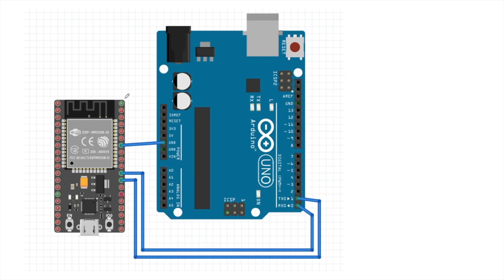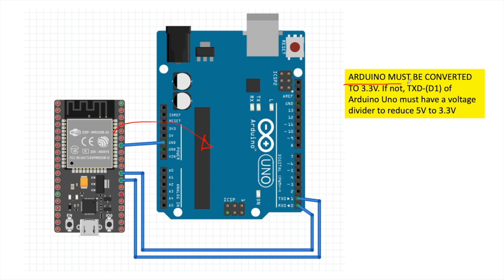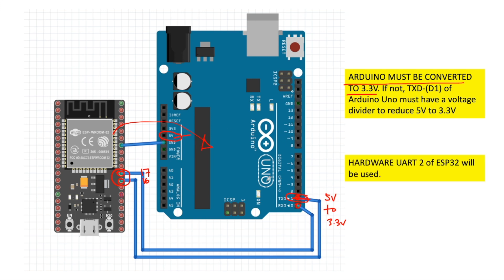To do some demonstration, we will be connecting our ESP32 to an Arduino Uno. This Arduino must be converted to 3.3 volts so that we can directly connect the TX and RX to the RX and TX of the ESP32. In the ESP32, we are using UART2, which is GPIO 16 and GPIO 17. If your Arduino is not converted to 3.3 volts, you just need to use a voltage divider on pin 1 so that the 5 volts will be reduced to 3.3 volts. I will put the link below on how to convert your Arduino Uno to 3.3 volts.